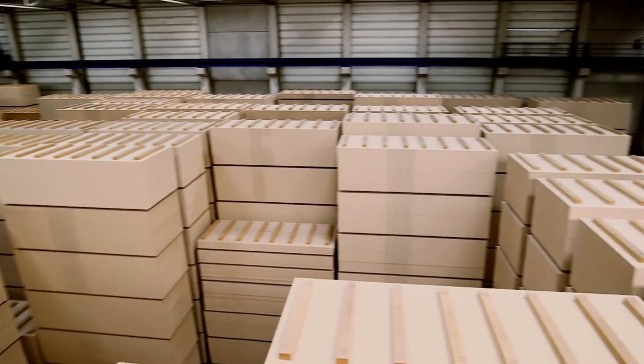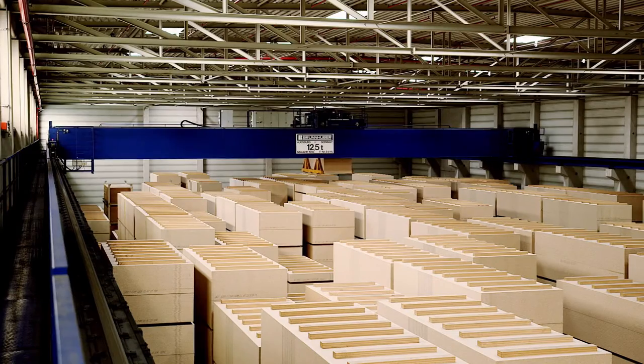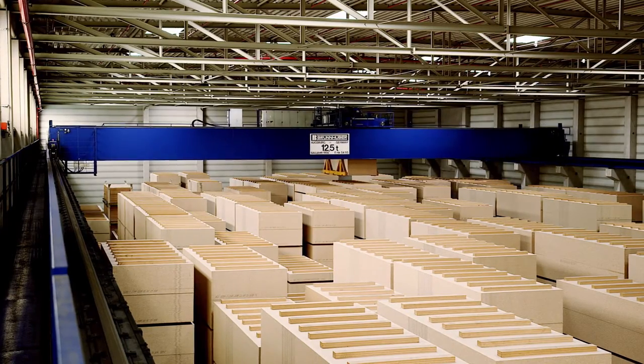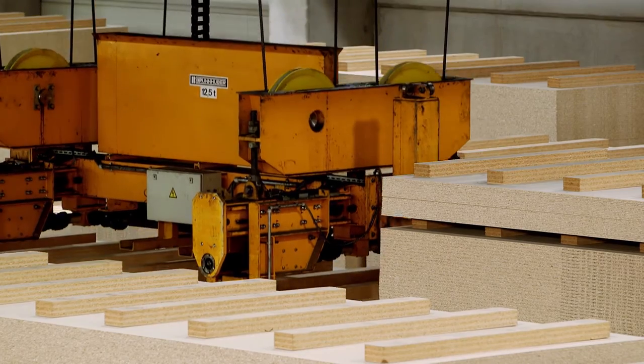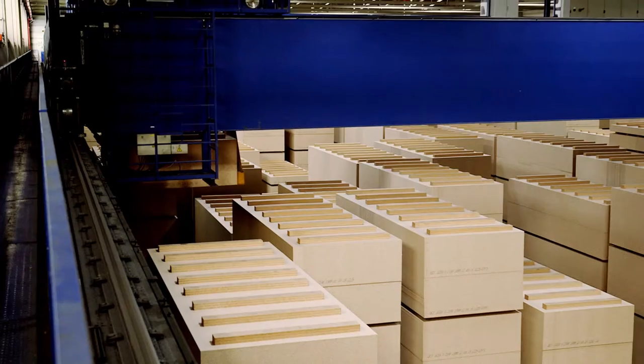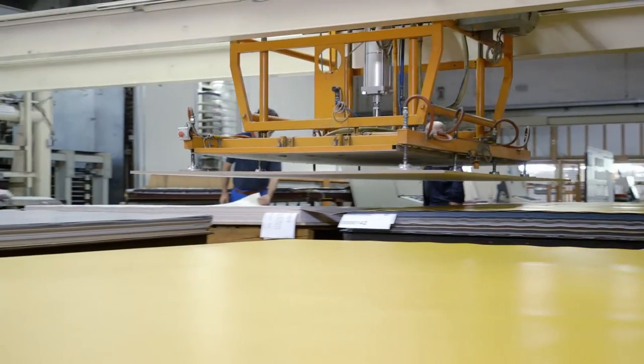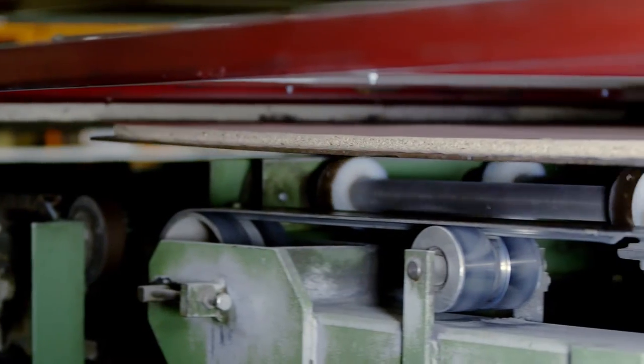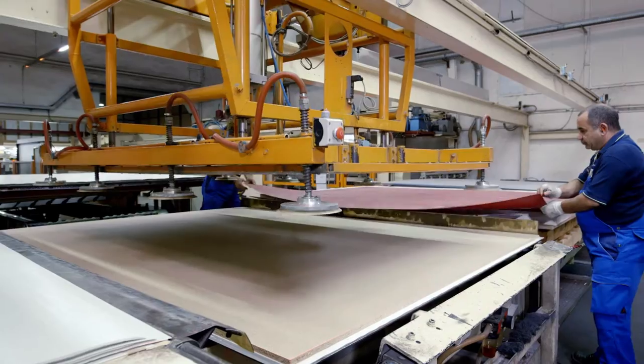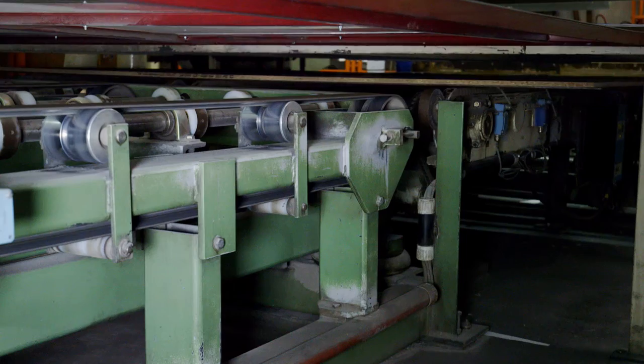We keep stocks of up to 25,000 running metres of panels that are moved by crane or forklift. Every hour, up to 120 running metres of panels leave our crane-served store towards the short-cycle press. A vacuum conveyor unit carries them onto the conveyor belt and places them between two decor films.